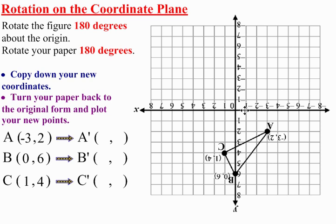So A prime will be 3 to the right and 2 down. 3 to the right would be a positive 3. 2 down would mean negative 2. So those are the coordinates for A prime.